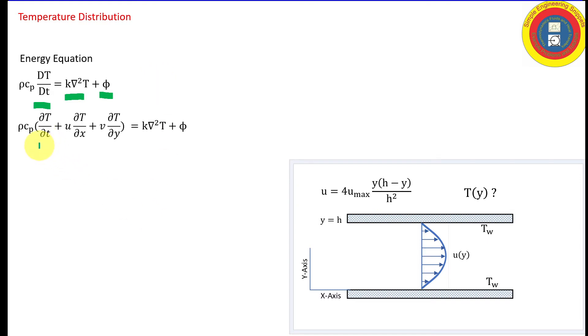So expanding the material derivative, I have the local time derivative. And that's going to be zero because we're doing steady state. And then I have the convective acceleration. Again, keeping with two dimensions in the x and y direction. And things are fully developed in the x direction. So the derivative of temperature with respect to x is equal to zero. And again, there is no y component of velocity. So the entire left-hand side is equal to zero.